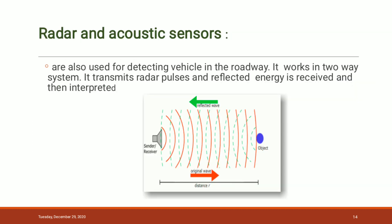The next one is radar and acoustic sensors. These are also used for detecting vehicles on a roadway. The radar is mounted on the side of the road to measure traffic flow and for detecting stopped or standing vehicles. Radar pulses are transmitted and a portion of energy is reflected or scattered from the vehicle or object back towards the sensor. This reflected energy is received and processed to count the traffic flows.